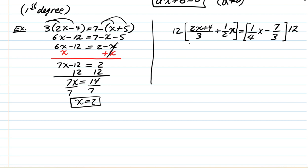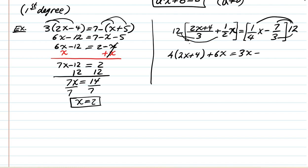Multiplying both sides by 12: on the left, 12 divided by 3 is 4, giving 4 times (2x plus 4); distribute to the second fraction, 12 divided by 2 gives 6x. On the right, 12 times one-quarter gives 3x; 12 times seven-thirds gives 12 divided by 3 equals 4, times 7 equals 28. Notice how all fractions disappear, leaving a nice linear equation.